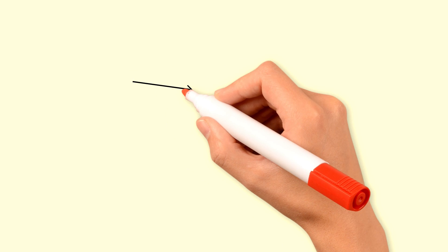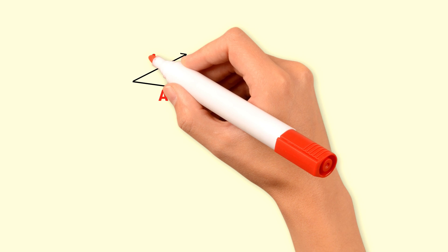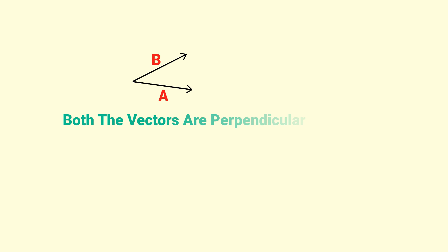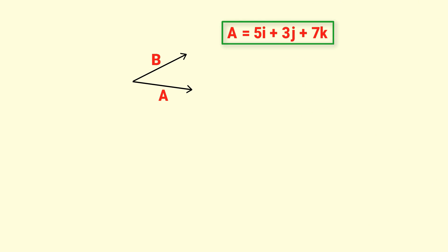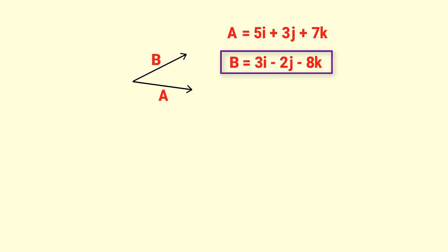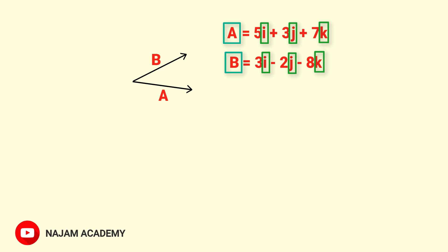Let's consider vector A in one direction and vector B in another direction, and let both vectors A and B be perpendicular. The components of vector A are 5i plus 3j plus 7k, while the components of vector B are 3i minus 2j minus 8k. Note that arrows on vectors and heads on unit vectors are intentionally ignored for simplicity.